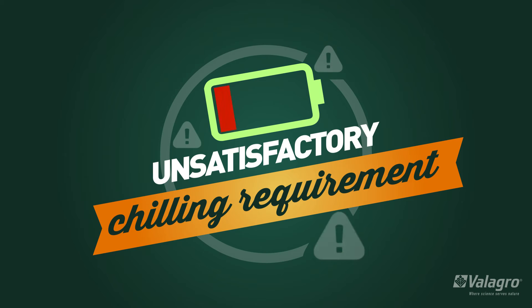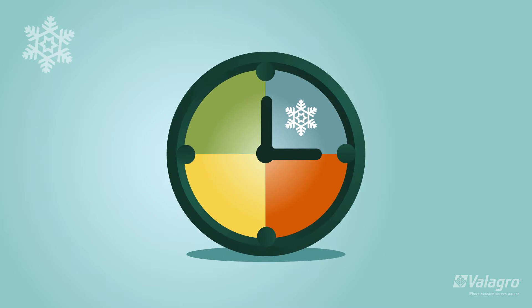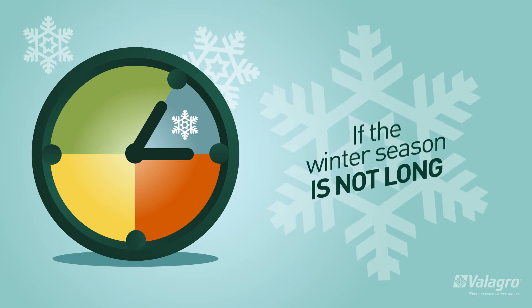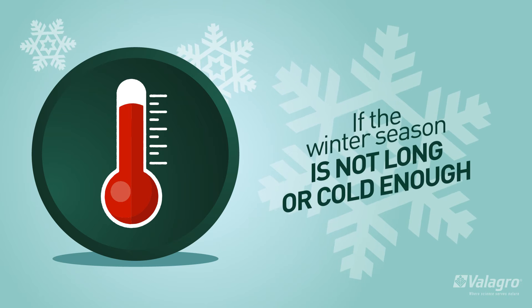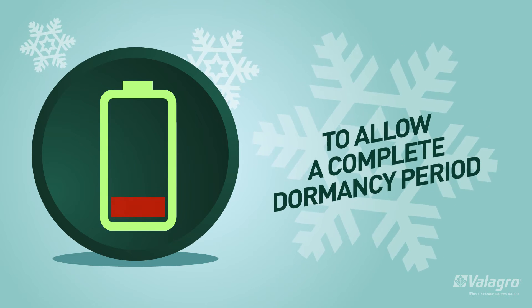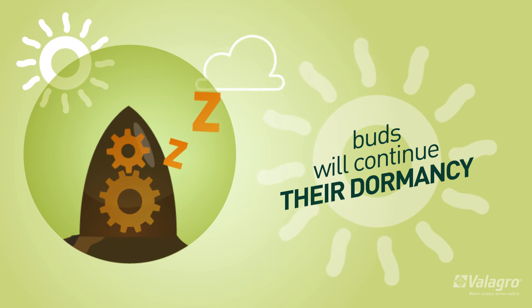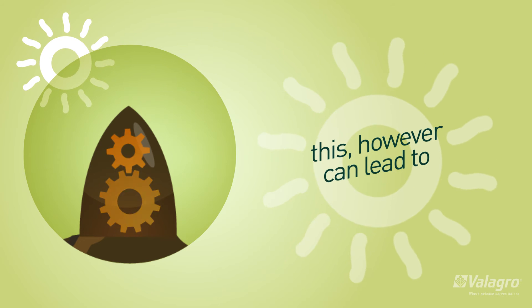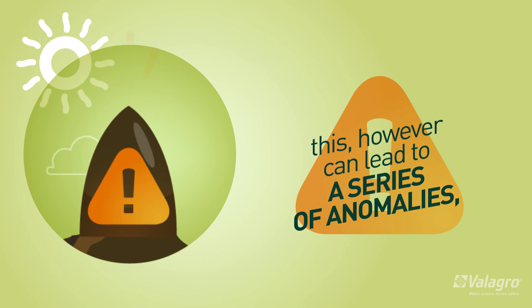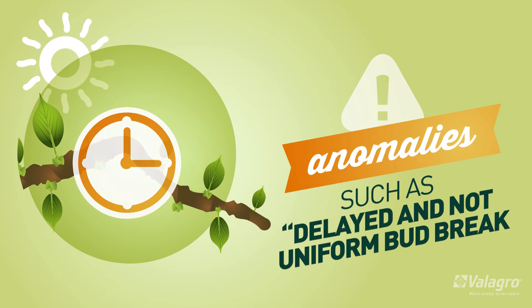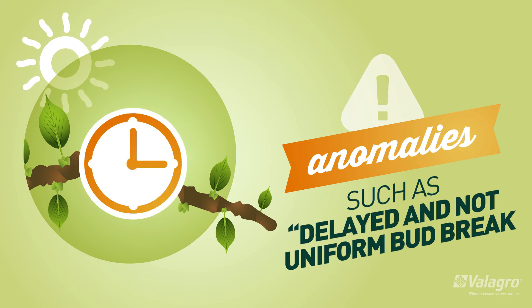Unsatisfactory chilling requirement: if the winter season is not long or cold enough to allow a complete dormancy period, buds will continue their dormancy. This, however, can lead to a series of anomalies, such as delayed and non-uniform bud break.